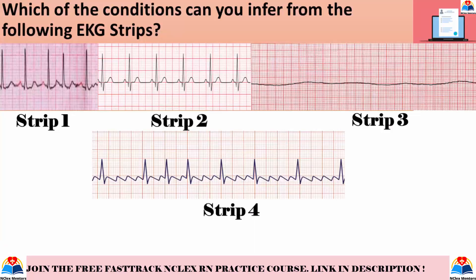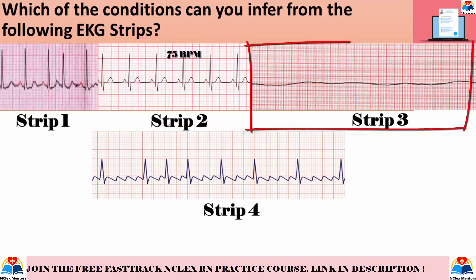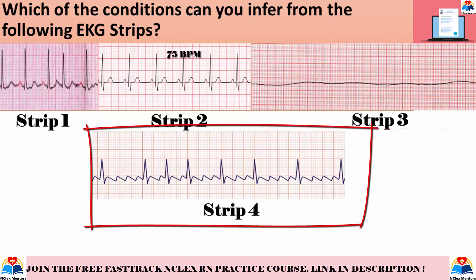You are given four EKG strips to identify. The first strip is atrial fibrillation — the P-wave is absent, the rhythm is irregular, and you should see multiple small blunt waves. The second strip is normal sinus rhythm — there is a normal P-wave, QRS complex, T-wave, and a heart rate of 75 BPM within the normal resting range of 60–100 BPM. The third strip is asystole — there is no electrical activity or wave pattern on the EKG. The fourth strip is atrial flutter, identified by an extremely high heart rate of 250–350 beats per minute, regular rate, and well-defined P-waves showing a sawtooth pattern.